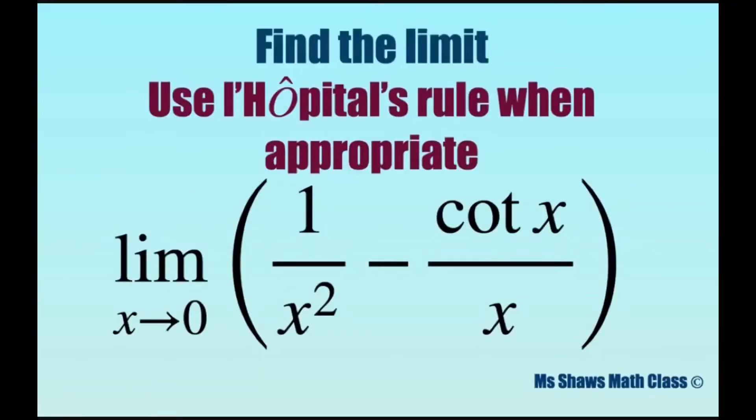Hi everyone! We're going to find the limit as x approaches 0 of 1 divided by x squared minus cotangent of x divided by x.